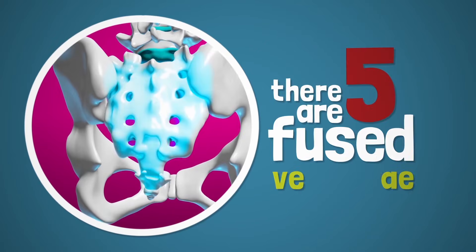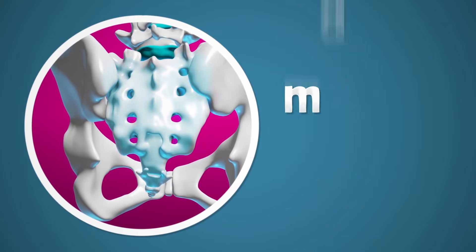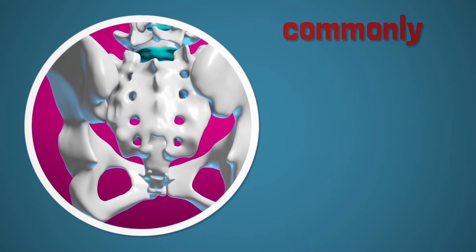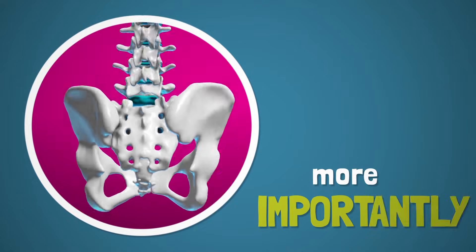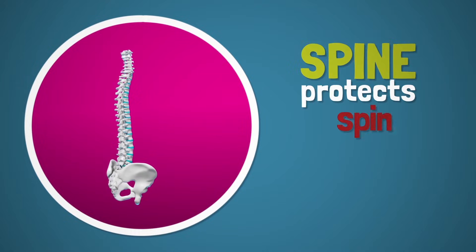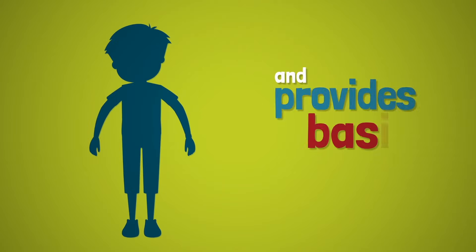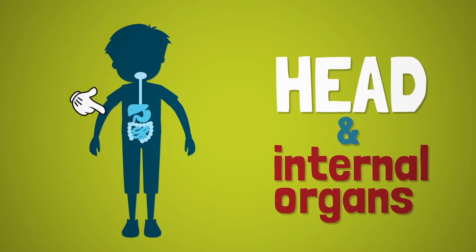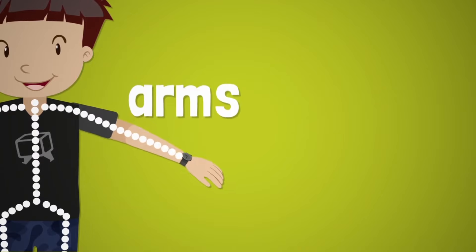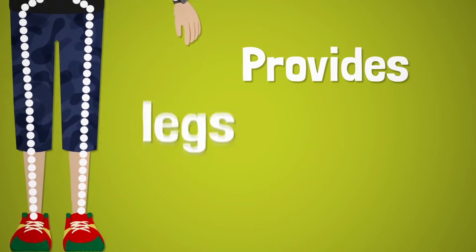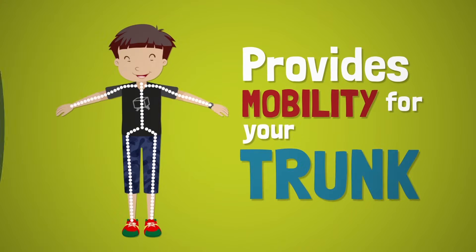In addition, there are five fused vertebrae below the lumbar spine that make up the sacrum, commonly referred to as the tailbone. More importantly, the spine protects the spinal cord and provides a base of support for the head and internal organs. It is a functional link between your arms and legs and provides the mobility for your trunk.